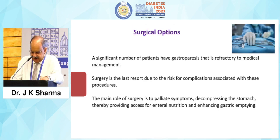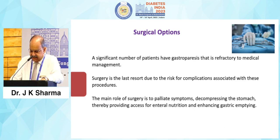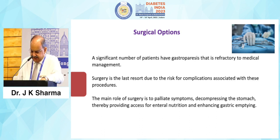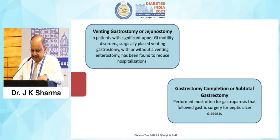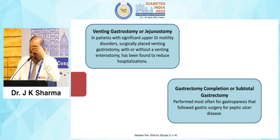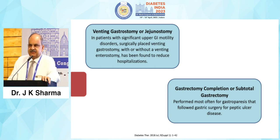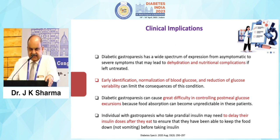Regarding surgical options, a significant number of patients refractory to medical management can be referred to a surgeon. Surgery is the last resort due to the risk of complications. The main role of surgery is to palliate symptoms, decompress the stomach, and provide access for enteral nutrition and enhance gastric function. Procedures include venting gastrostomy, jejunostomy, completion gastrectomy, or subtotal gastrectomy — to be decided by the gastrointestinal surgeon.